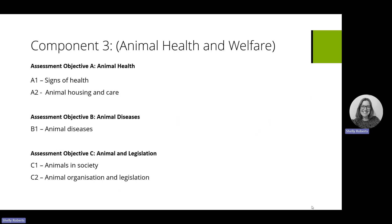The assessment objectives are A, B, and C. A is animal health, B is animal diseases, and C is animals and legislation. The assessment will cover all of these, but it is a synoptic assessment, which I'll explain shortly. The majority of questions are probably going to be in section A, but they do cover sections B and C, so you need to ensure that learners understand all elements.